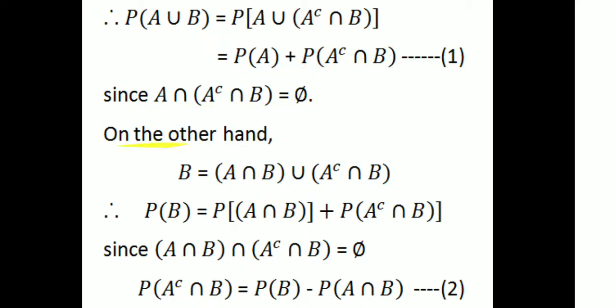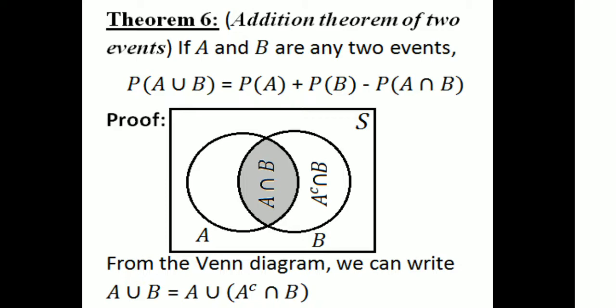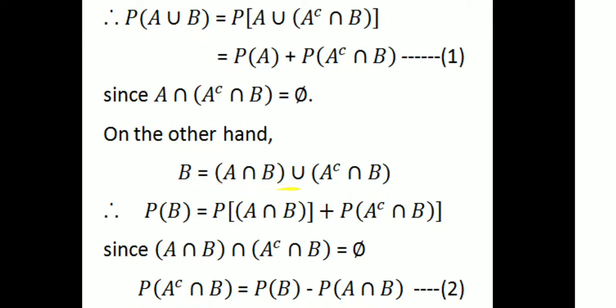On the other hand, B equals A intersection B union A complement intersection B. So for the probability of B, we get: probability of A intersection B plus probability of A complement intersection B. That is, probability of A complement intersection B is equal to probability of B minus probability of A intersection B.